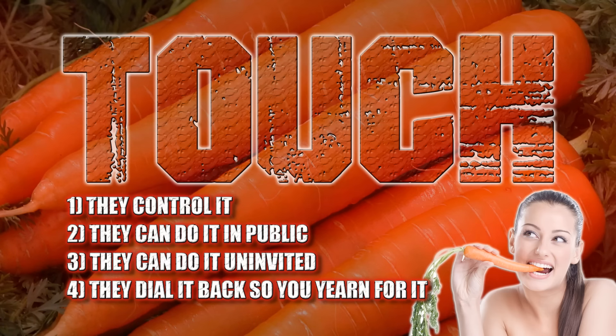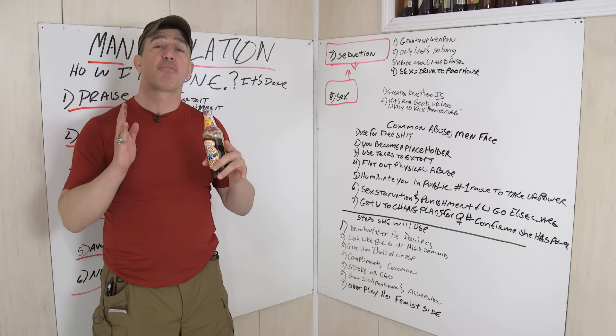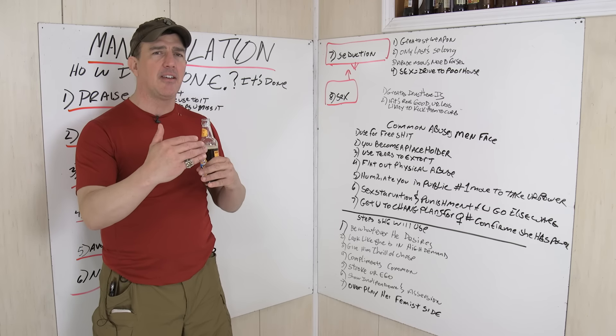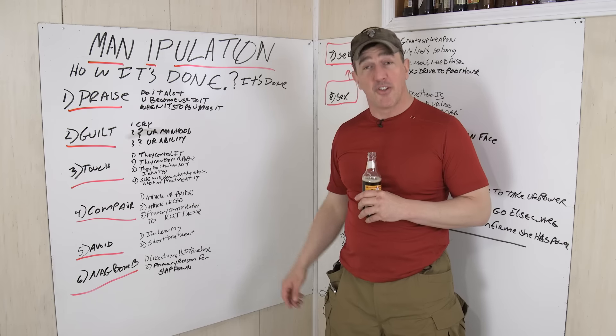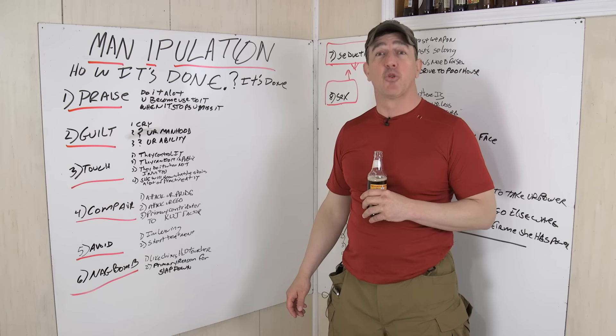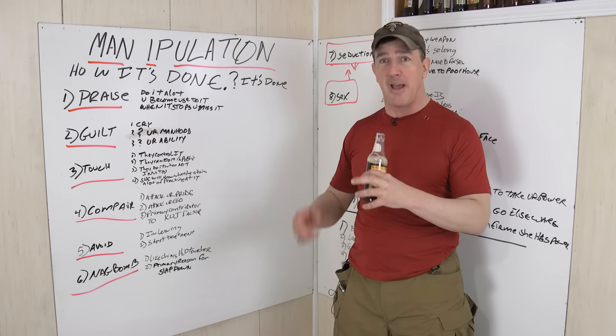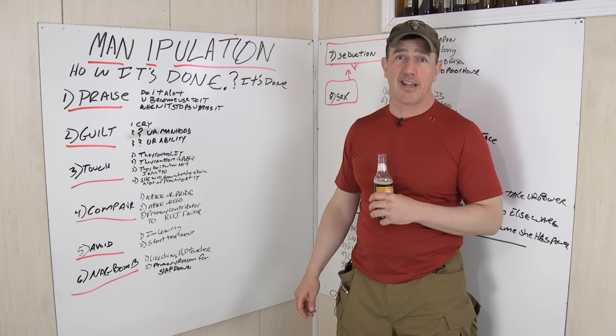Simple touch. They control it. They can do it in public. They can get away with it when it's uninvited. And just like praise, they do it a lot in the beginning. And then they dial it back. And then you start to miss it. When this is happening, you are getting manipulated like a Rubik's cube because they want all sides to match. Then you'll say I do and they can take you for half your shit.